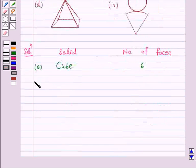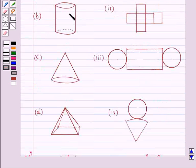In part B the given solid is cylinder and it has two circular faces.